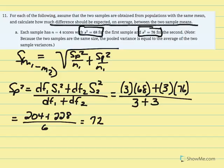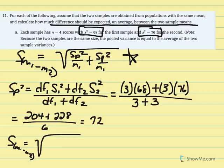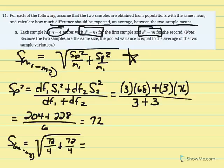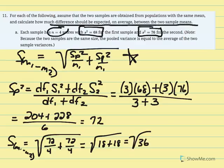Now we calculate the estimated standard error of the mean difference using: square root of pooled variance over N1 plus pooled variance over N2. Replacing variables: 72 over 4 plus 72 over 4. Taking them as separate fractions: 72 divided by 4 equals 18, so 18 plus 18 equals 36. The square root of 36 is 6.